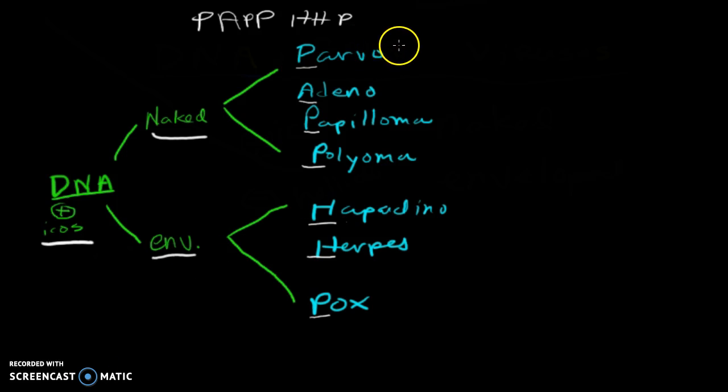So we're now going to talk about the different types. For parvovirus there's only one here, we just have B19. Adeno, you just have adenovirus. Papilloma, we have the human papillomavirus, cervical cancer. And then we have our polyomaviruses, which aren't as common, but it's the JC and then the BK virus. I just remember Jesus Christ and Before Christ.